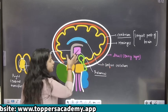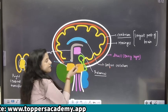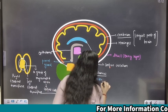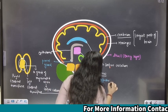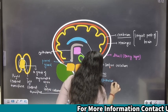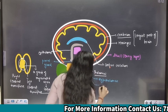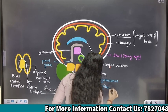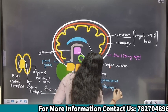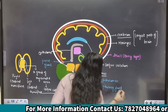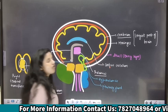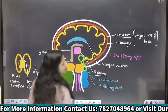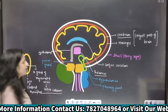Aapka jo base hota hai diencephalon ka, woh hypothalamus banaata hai. Hypothalamus connect hota hai pituitary gland se. Pituitary gland hormones secrete karta hai. Hypothalamus ko master's gland kyun bolte hain? Kyunki yeh pituitary gland ko bhi control karta hai.